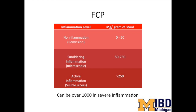Smoldering inflammation often occurs in patients about to have a flare or recovering from a flare. It generally correlates with an endoscopy without visible ulcers, but with inflammation visible in intestinal biopsies when viewed through a microscope.